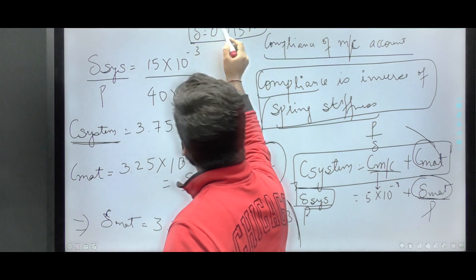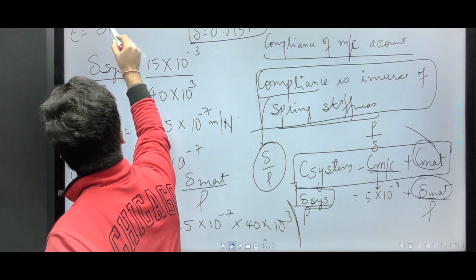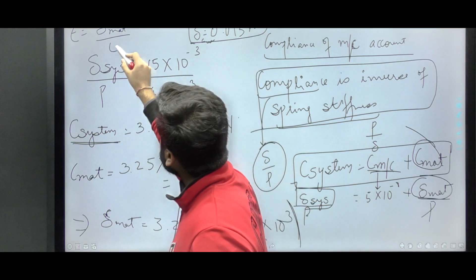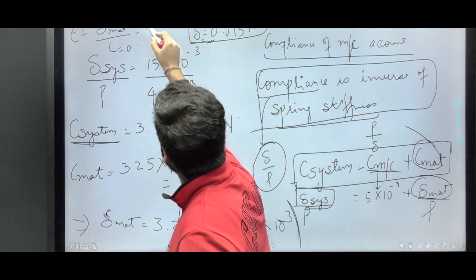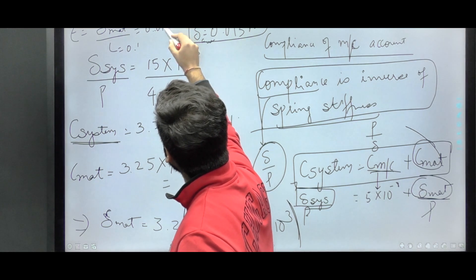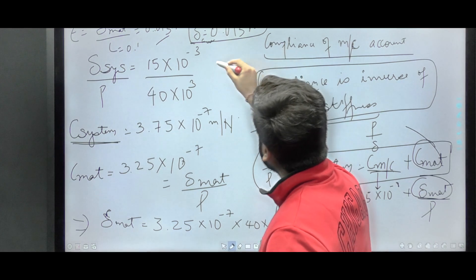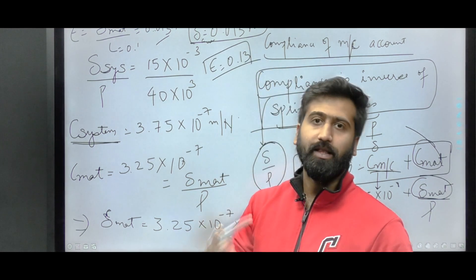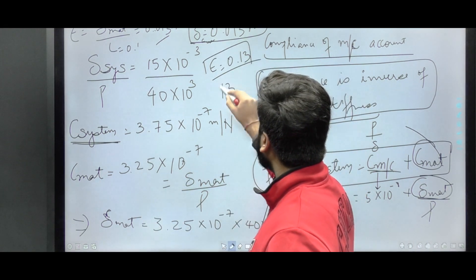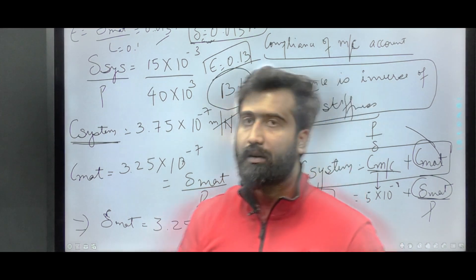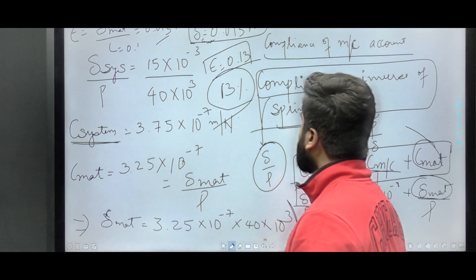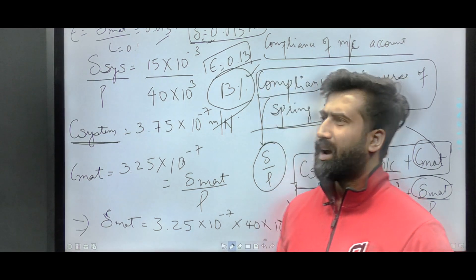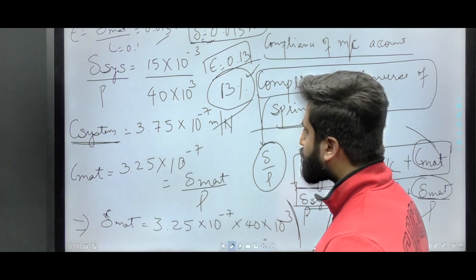Strain equals delta_material upon L. L is 0.1 meters and delta_material is 0.013 meters. So strain equals 0.013 divided by 0.1, which equals 0.13. In percentage, this is 13%. The range given by IIT for this question is 12 to 14%, so 13% is the correct answer.